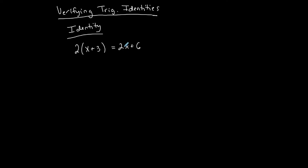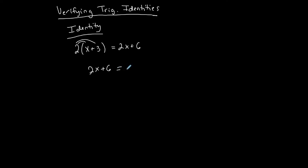In trigonometry, we have the same idea — different expressions in different trigonometric forms. When we verify identities, we have to prove that one side is equivalent to the other. This would be an easy identity to prove because all we'd do is distribute the two to get 2x plus six, making the left side look the same as the right.